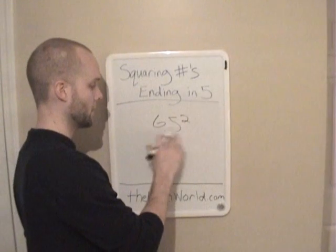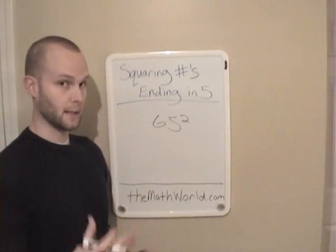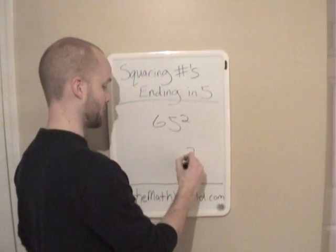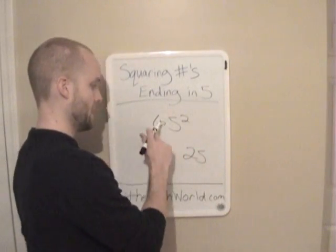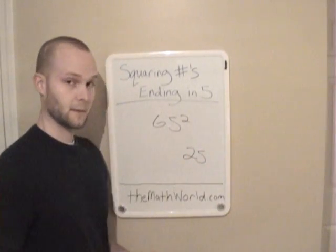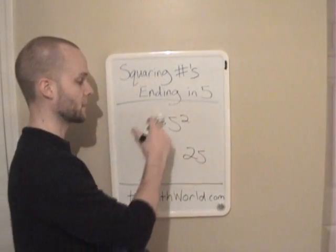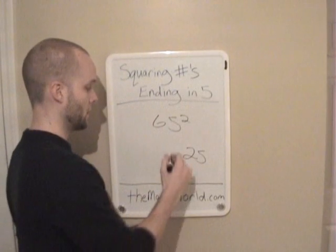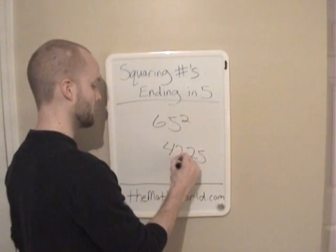Let's take a look at 65 squared. Again, the first thing we're going to do any time you see a number squared that ends in 5 is you're going to write down 25. And then 6 times 7 — the next highest number — 6 times 7 is 42.